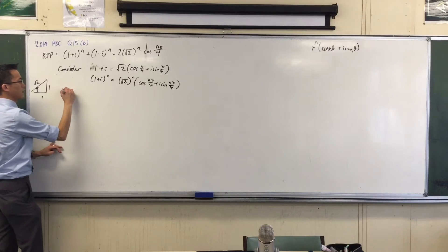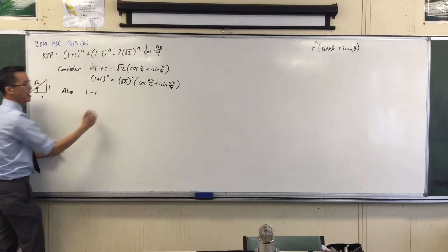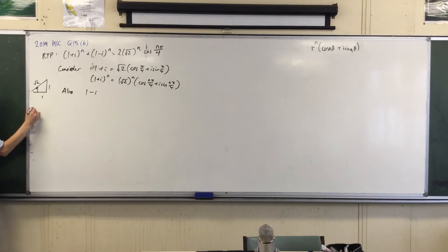In exactly the same way, also, 1 minus I. Think about where that is. You still went one unit to the right, and then you go one unit down. So you've got the same triangle, but flipped over. So 1, 1, same modulus, but what's the argument?